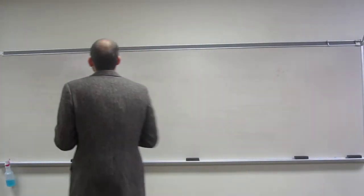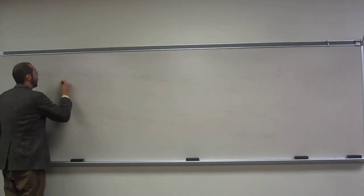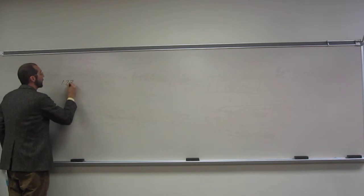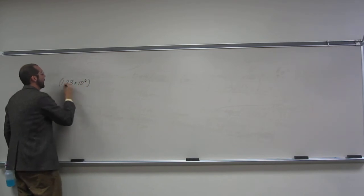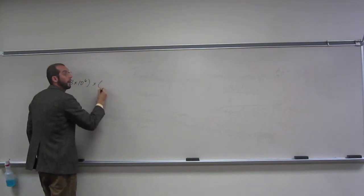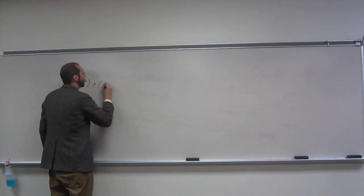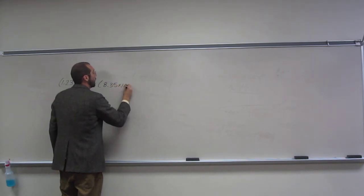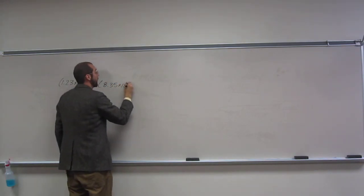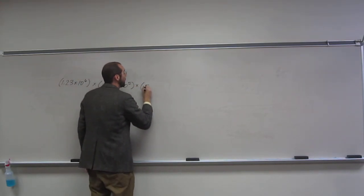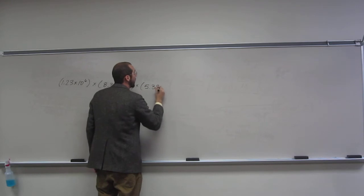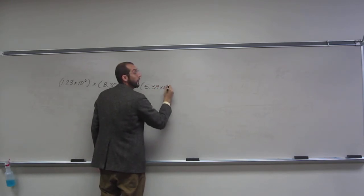Okay, so it says calculate the following expression to the correct number of significant figures. It gives you 2.3 times 10 to the 6th multiplied by 8.35 times 10 to the 5th, and then multiply that by 5.39 times 10 to the 5th.